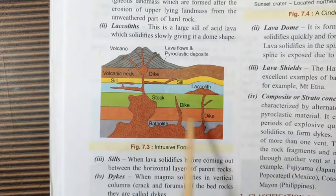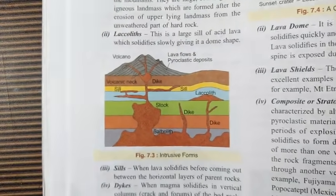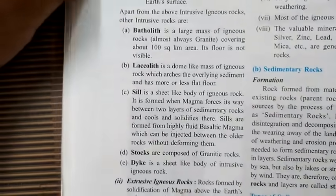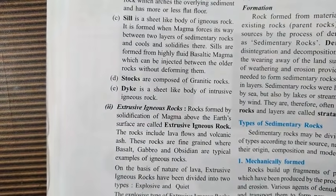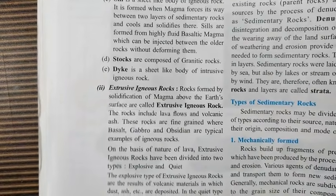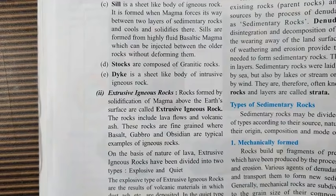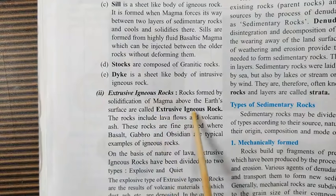We have seen intrusive igneous rocks. Now the second type is extrusive igneous rocks. When magma comes above the surface of the earth, we call it lava. When it solidifies, we call them extrusive igneous rocks.